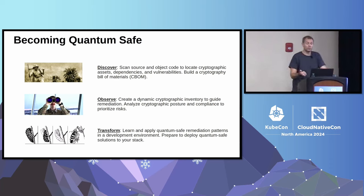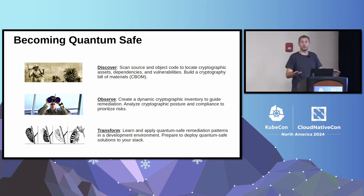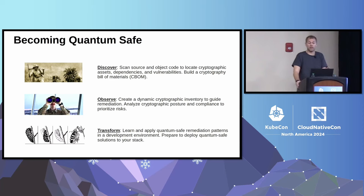The first step is Discover — do you know what cryptography you're using and where? Like S-BOMs for software, there's a cryptography bill of materials. You want to inventory your code and know where you're using cryptography. If you have to update it, where do you have to update it? Remember Y2K — we went from two to four digits in years. It's a similar kind of thing here. Inventory your cryptography, build a C-BOM so you know where it is.